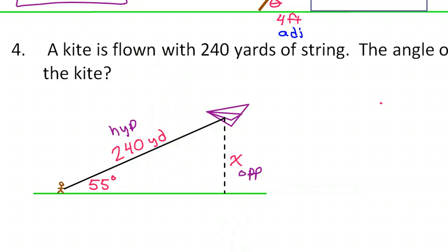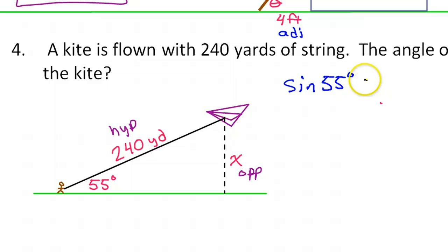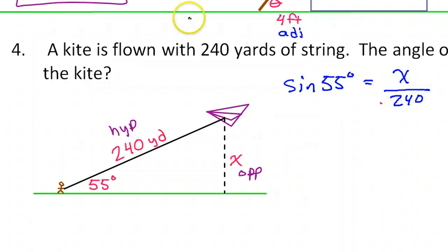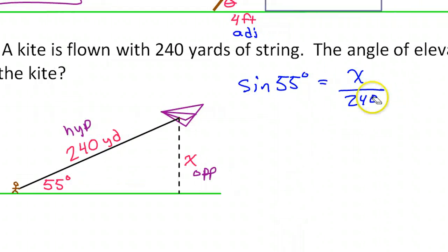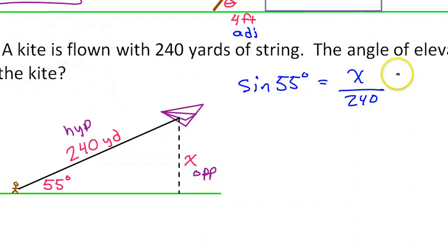So the sine function is what we're going to do. The sine of 55 degrees is opposite over hypotenuse, so that'll be x over 240. To solve this, do I need to do the swap thing? No — that only helps when the variable is in the denominator. Instead, I should multiply both sides by 240.